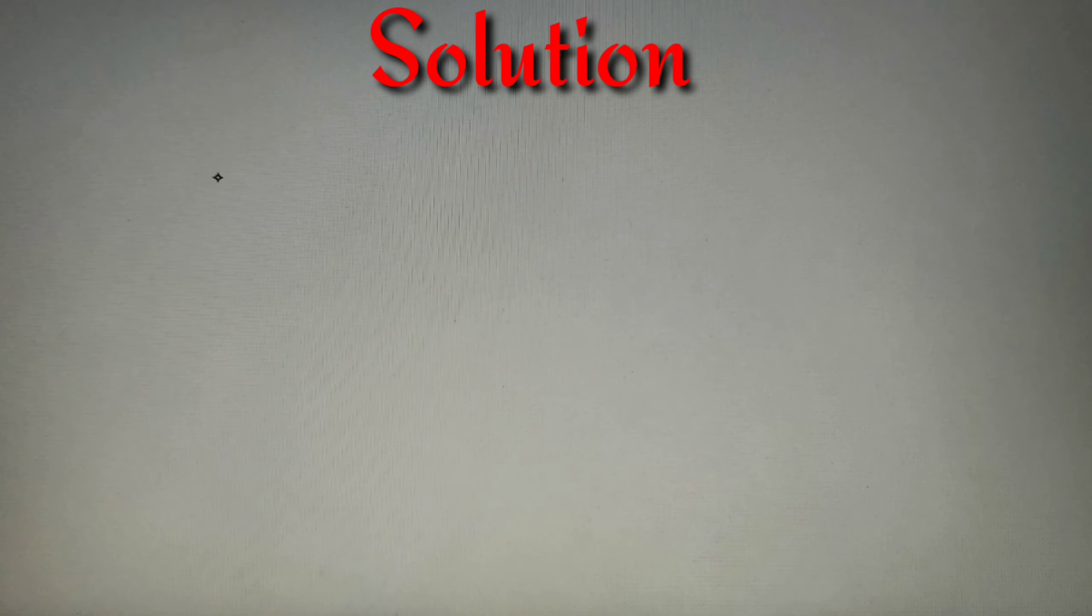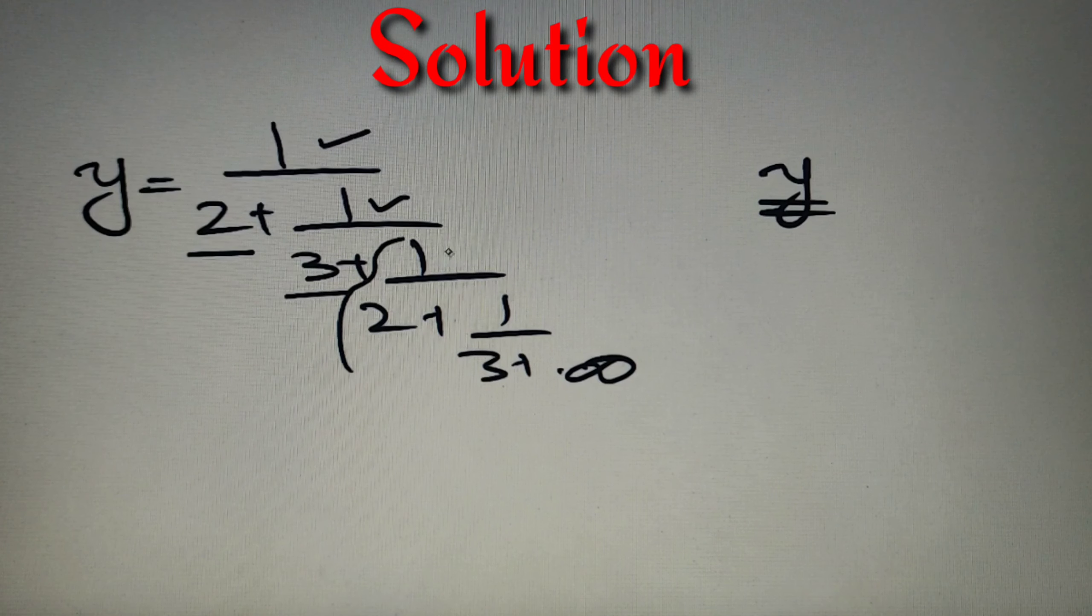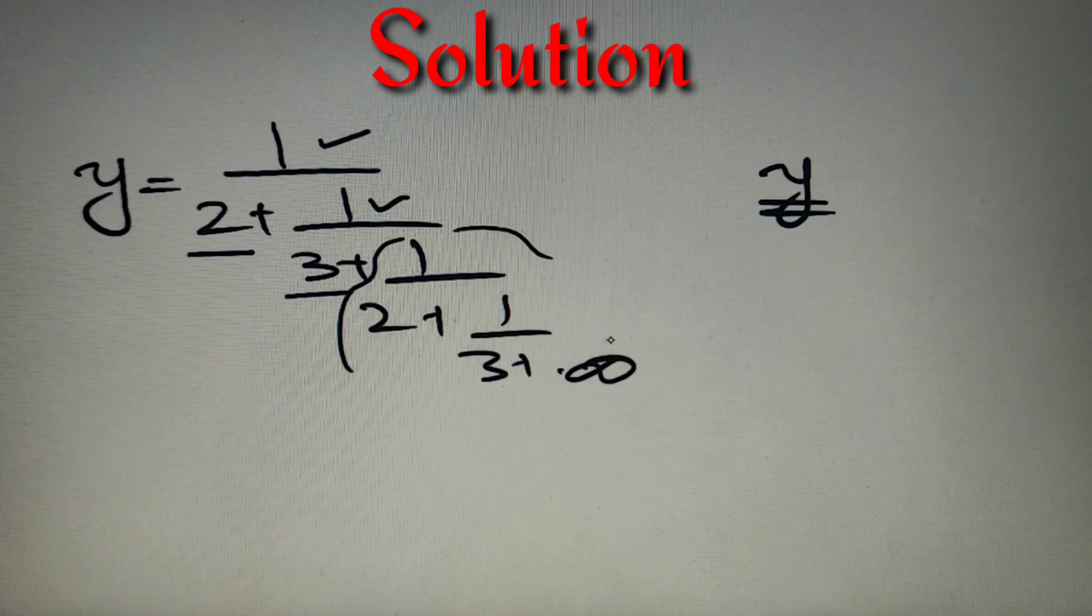Now if you look carefully, we can see that 1 is unique over here, 2 is unique over here, 1 is again unique over here and so is 3. But from this part 1 by 2 plus 1 by 3 plus, the pattern is again starting to repeat.